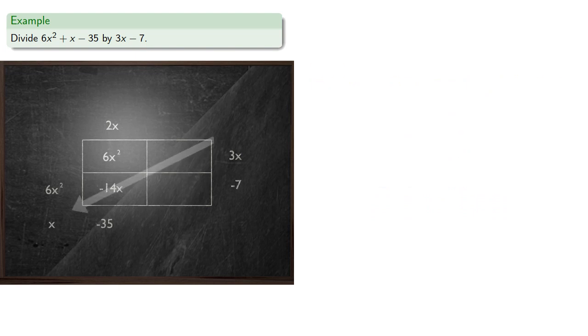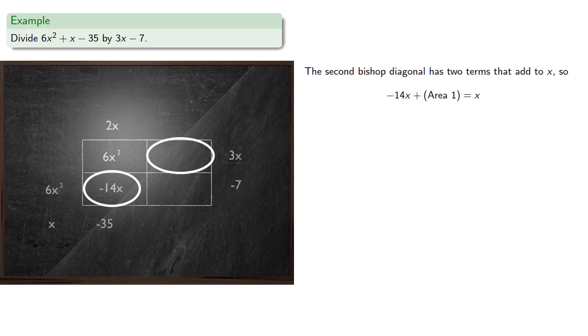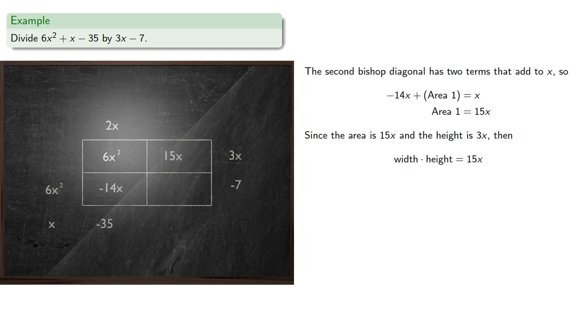Now let's take a look at that second bishop diagonal. The two terms along that second bishop diagonal have to add to x, and so that means negative 14x plus this area we'll call area 1 has to be x. And so that tells us area 1 is 15x. And since the area is 15x and the height is 3x, then we know that the width times the height is 15x, and so that tells us the width is 5.